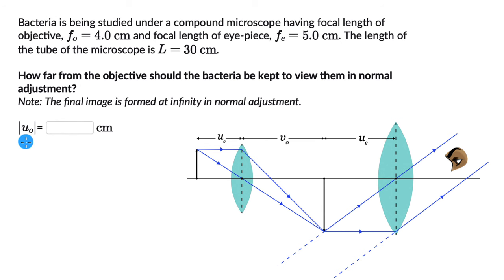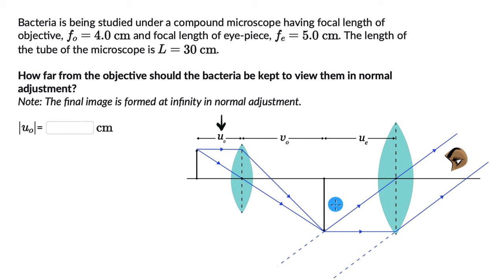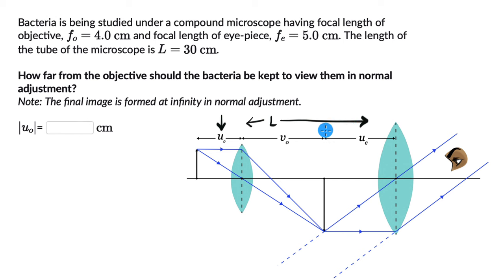We need to figure out U0, this object distance. We know the focal length of the objective lens and the focal length of the eyepiece lens. We also know that the final image is formed at infinity. So we have the object; there is an image, which acts as the object for the eyepiece lens, and the final image is formed at infinity. We also know the length of the tube, L, which is 30 centimeters.